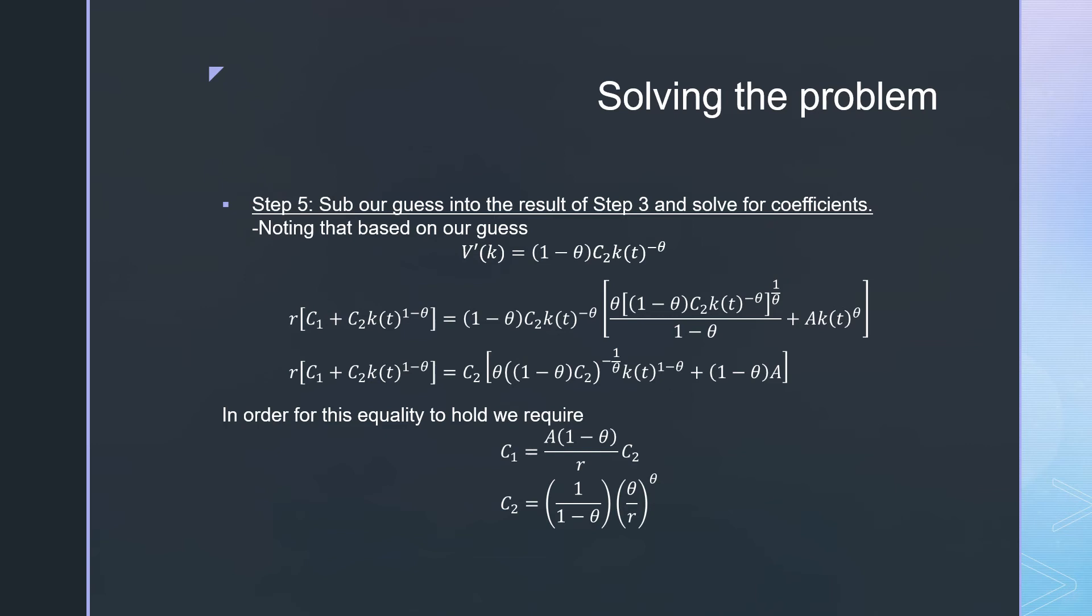For C1 we identify it as A times one over theta all over r times C2. And for C2 we have one over theta times theta over r raised to the power of theta. That's just working through the math.